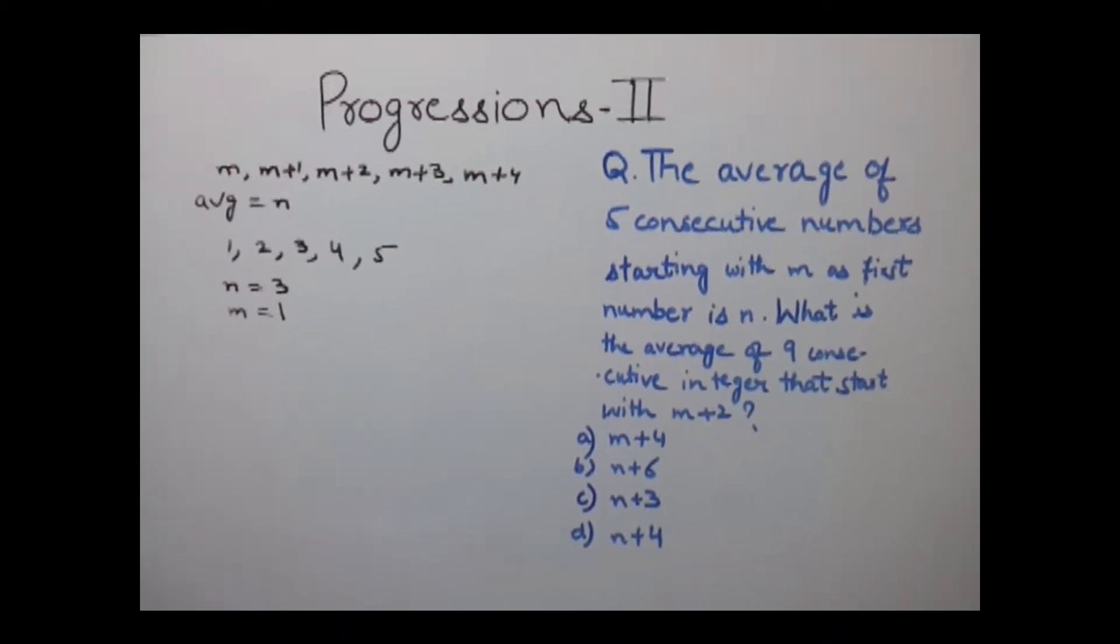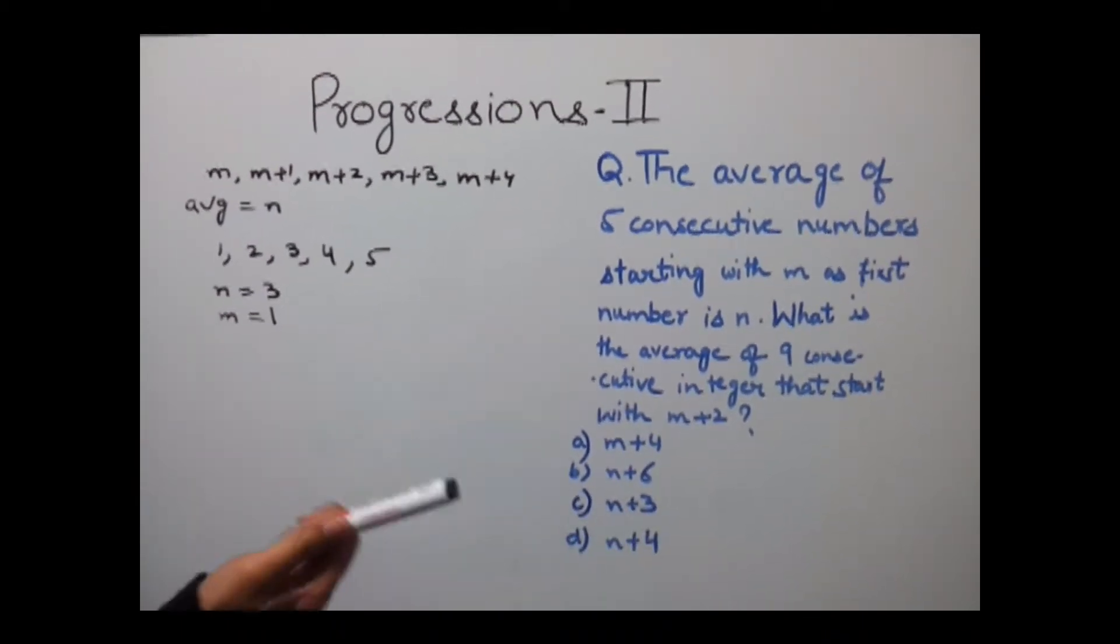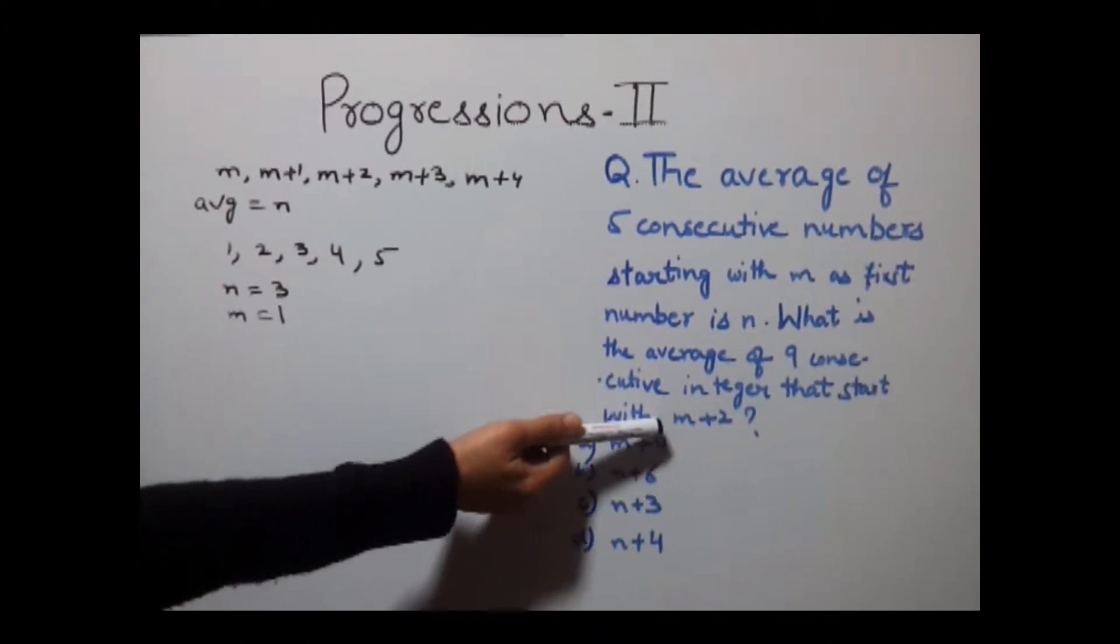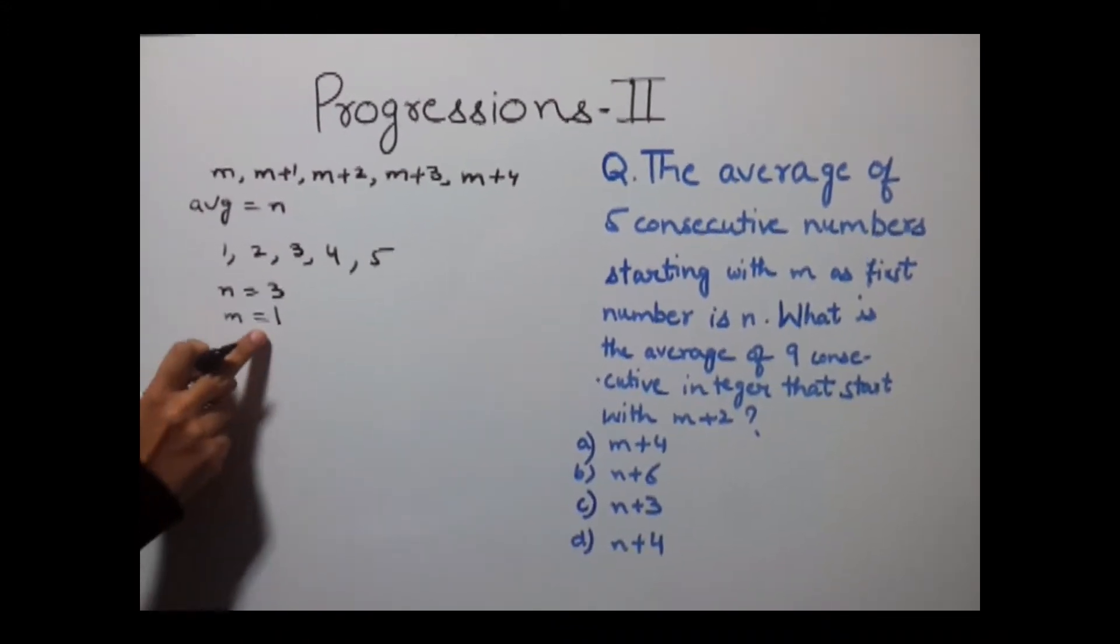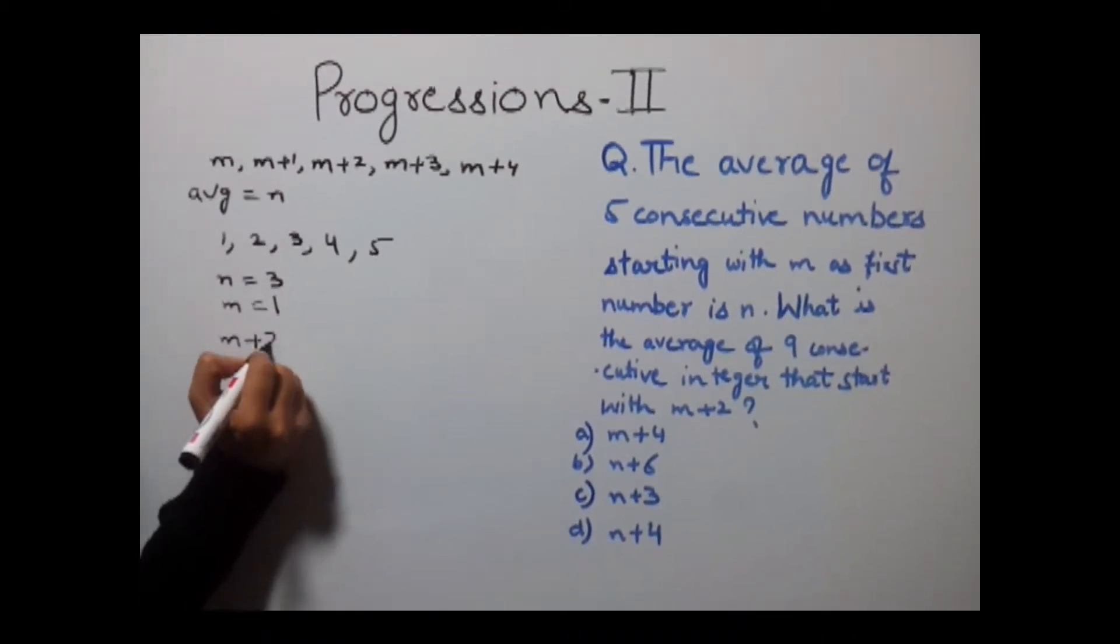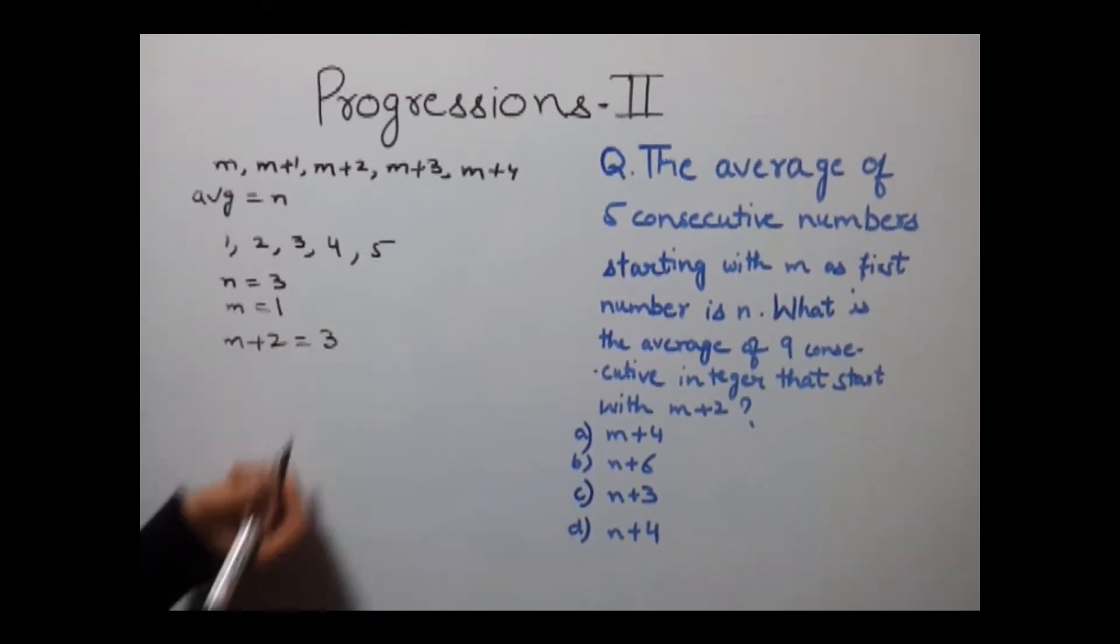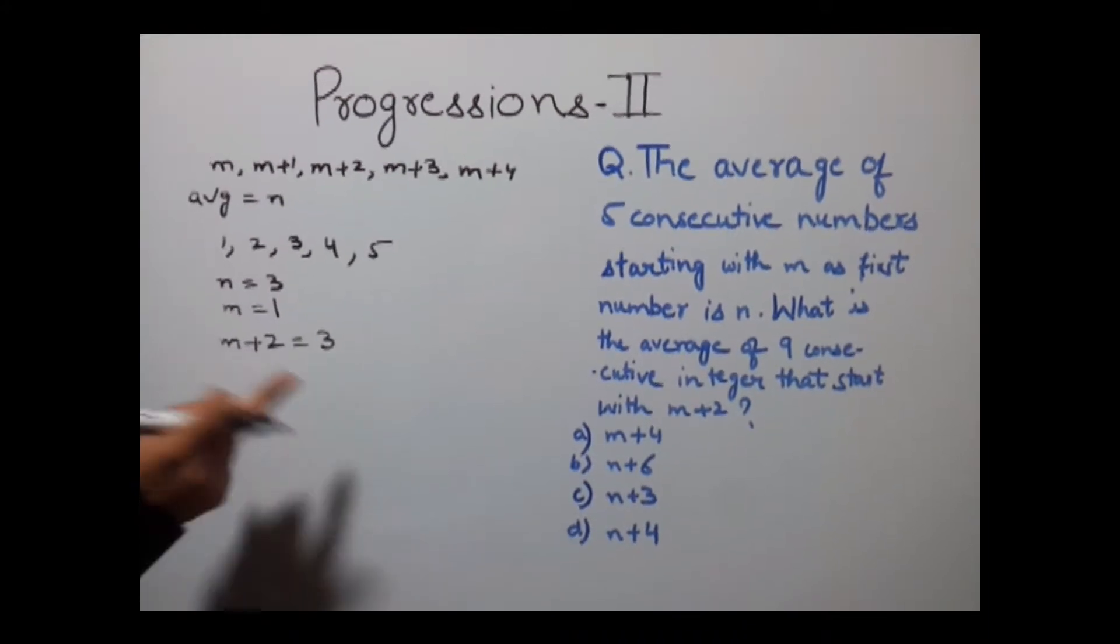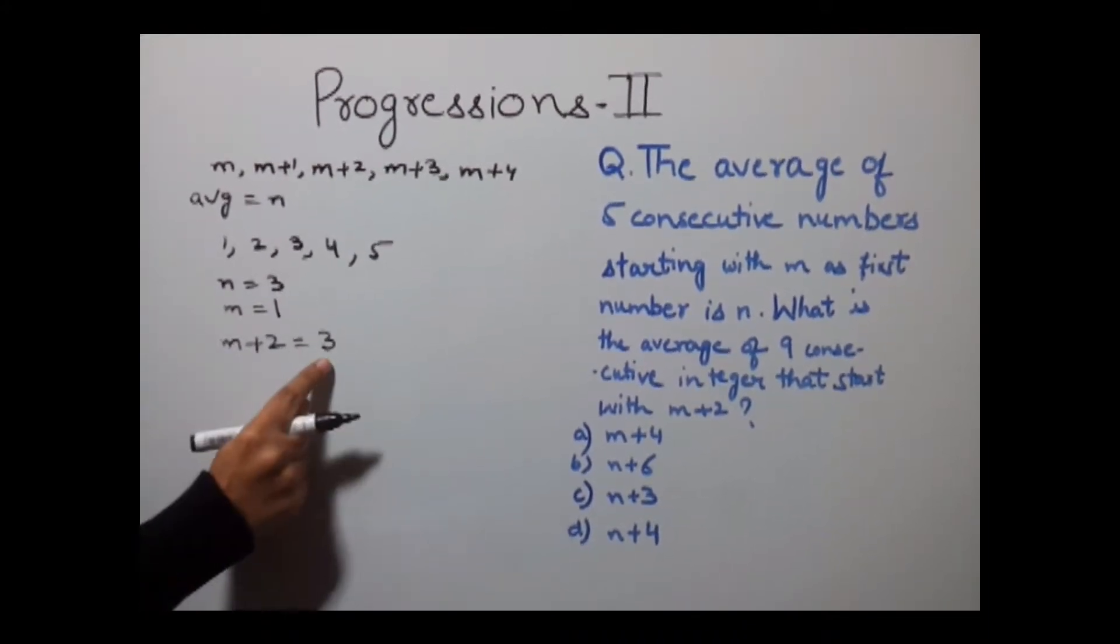Now it's been asked what is the average of 9 consecutive integers that start with m+2. Here our value of m is 1, so m+2 equals 3, and we have to find the average of 9 consecutive numbers starting with 3.